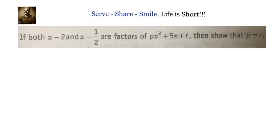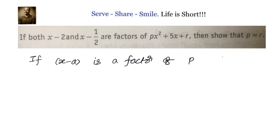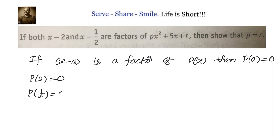First, let us understand what it means for x minus 2 to be a factor of the given polynomial. For that we go back to the factor theorem, which states: if x minus a is a factor of p(x), then p(a) equals 0. That means here p(2) equals 0, and p(1/2) also equals 0.